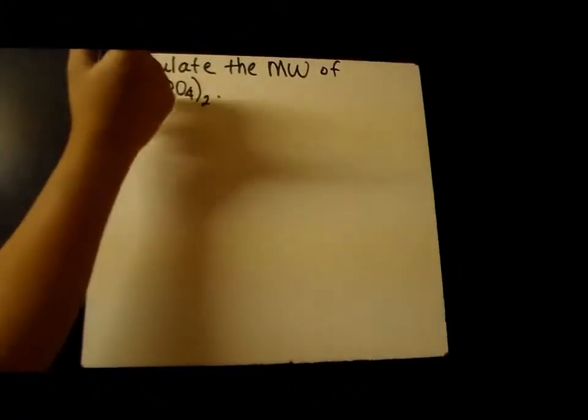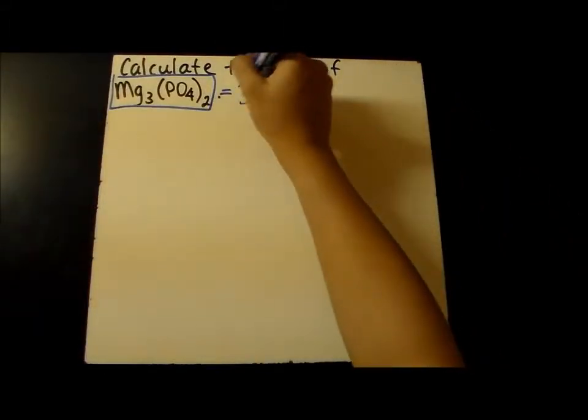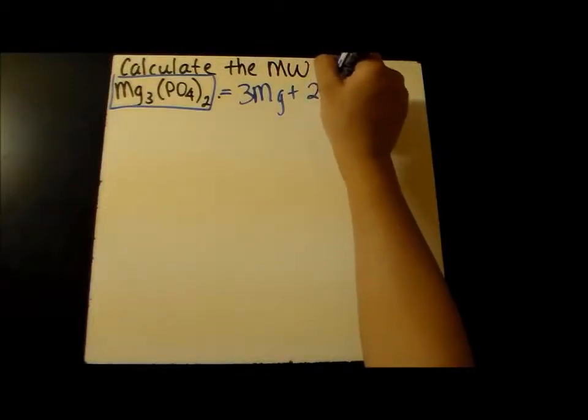Let's calculate the molecular weight of Mg3(PO4)2. Subscripts only apply to the element that precedes it, so there are three magnesiums. The subscript two applies to everything in parentheses before it.